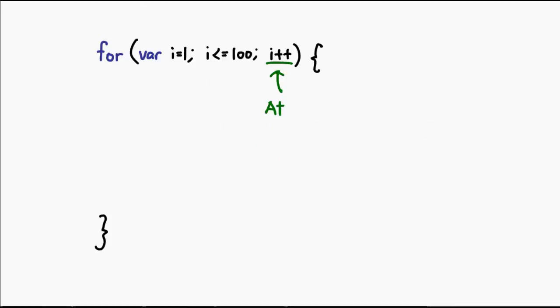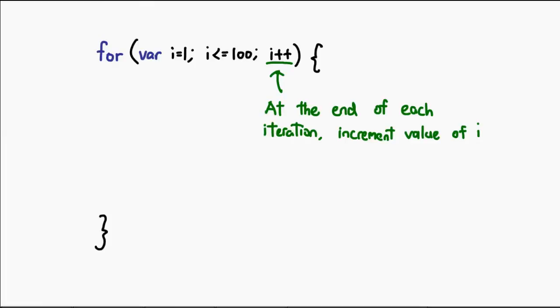At the end of each iteration — after you're done executing the code between the braces — you do an action. In this case, i++ means increment the value of i. In other words, we take the value of i, add 1 to it, and set that as the new value of i. With each iteration of the loop, the value of i increases. This saves us the trouble of rewriting logic again and again, since we need to process digits from 1 to 100 without writing our code a hundred times.